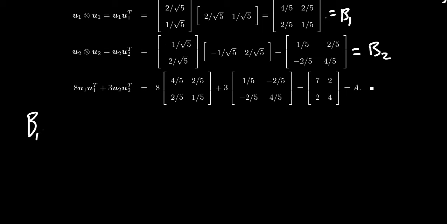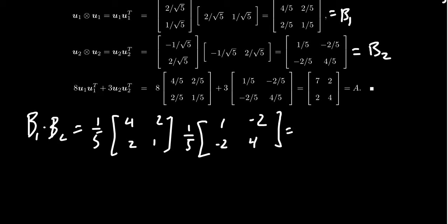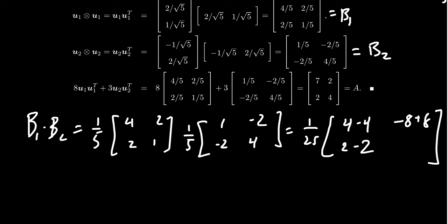If we take B1 times B2 as a matrix product, factoring out 1/5 from B1 gives (1/5)·[[4,2],[2,1]], and factoring out 1/5 from B2 gives (1/5)·[[1,−2],[−2,4]]. The two one-fifths combine to give 1/25. Looking at these products: first row times first column gives 4−4 = 0; first row times second column gives −8+8 = 0; second row times first column gives 2−2 = 0; second row times second column gives −4+4 = 0. So B1 times B2 equals the zero matrix, confirming that we do have orthogonal idempotent matrices.